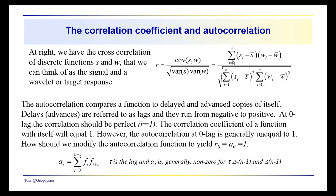Over here to the right, we've represented this as a sum of the products of signal amplitudes relative to their mean times the waveform amplitudes relative to their mean, divided by the square root of the sum of the squares of the signal amplitudes relative to the mean.